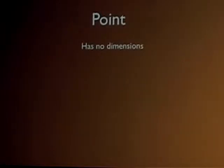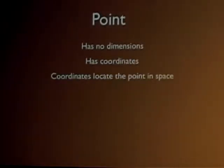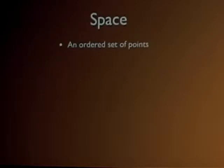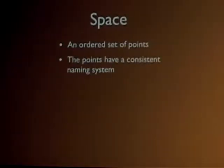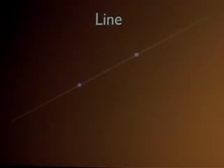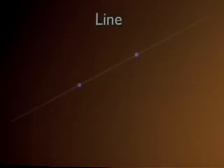The point has no dimensions. It has coordinates. Coordinates locate the point in space. Space is an ordered set of points; the points have a consistent naming system. A line — any two points define a line. Any two points define a line.